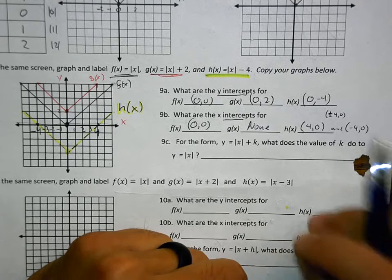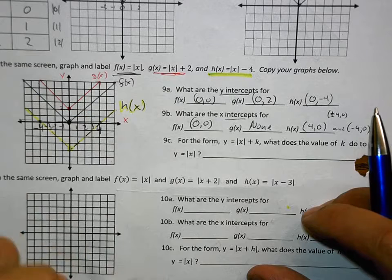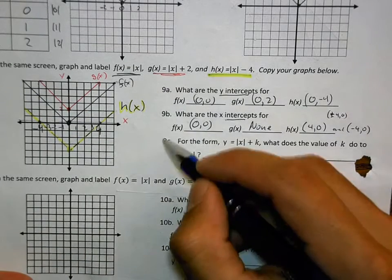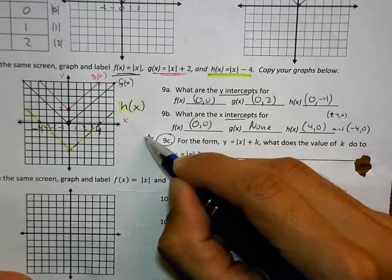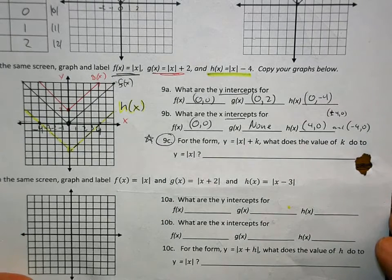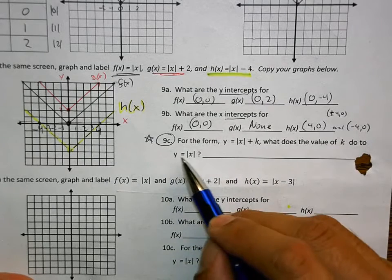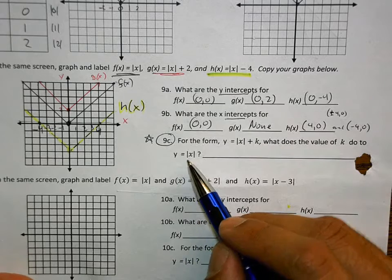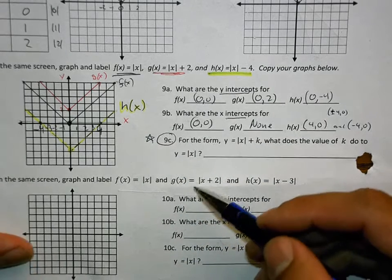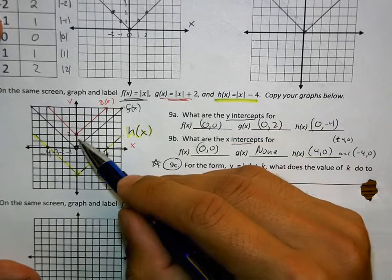Here's the last question. This is the biggest idea that we can get. The answer to 9c and 10c is the whole reason we're doing this worksheet. So, let's really make sure we understand what this question is saying. What does the value of k do to y equals the absolute value of x? Here's what it's asking you. Focus, kid. What it's asking you is, what happens when you add 2 to the graph?